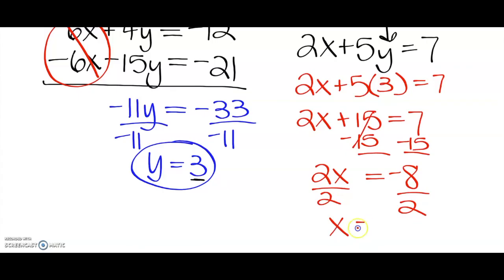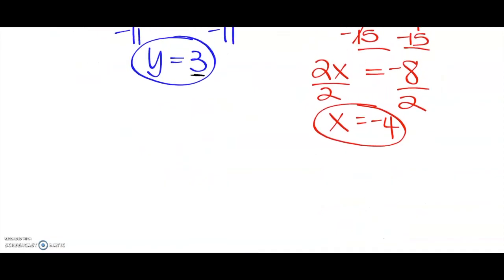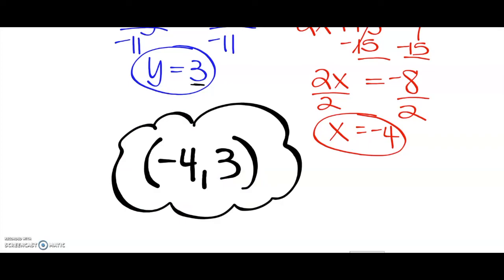So we are going to get that x equals negative 4. So we've got our ordered pair now, our x and our y value for the system of equations. Our solution should be (-4, 3). Good job, and I hope this video was helpful.